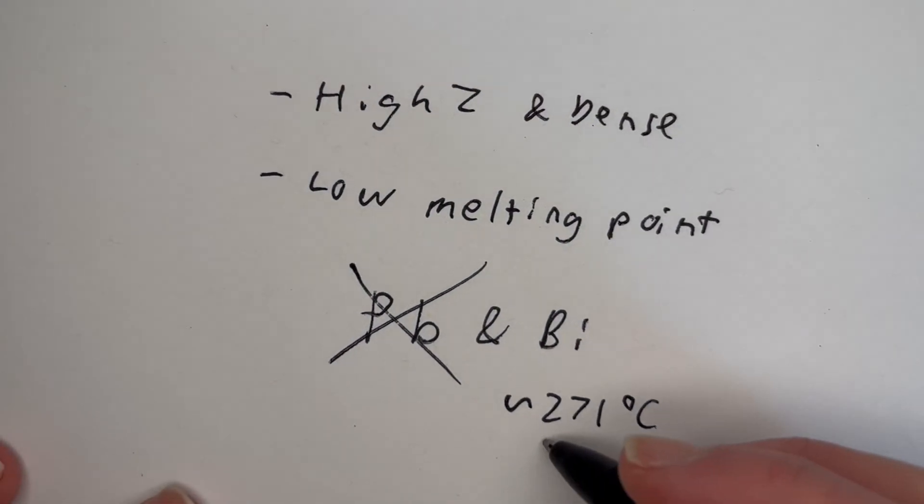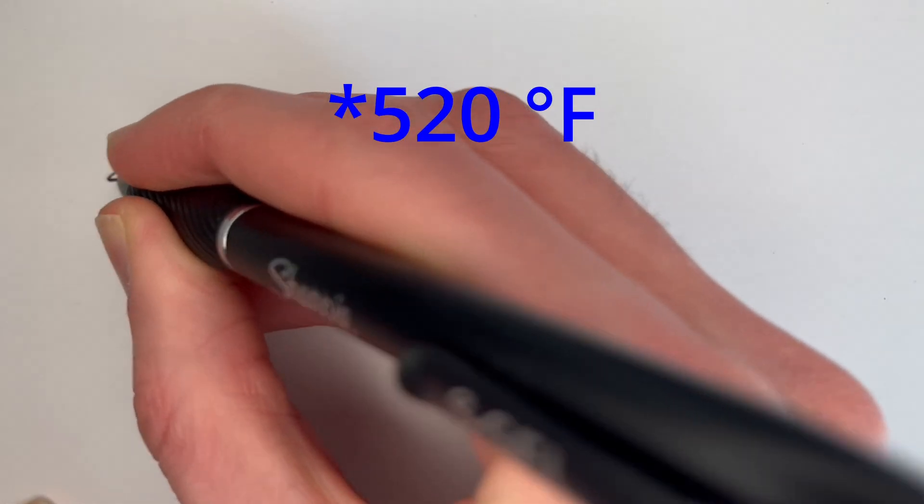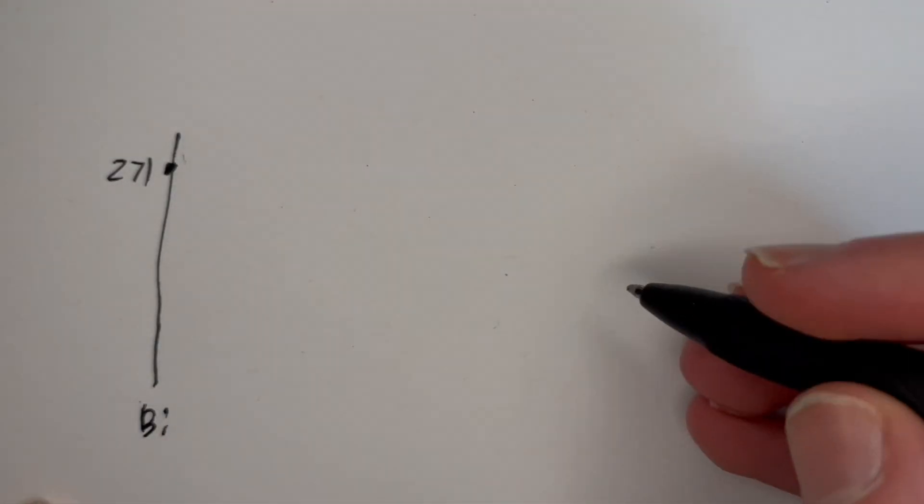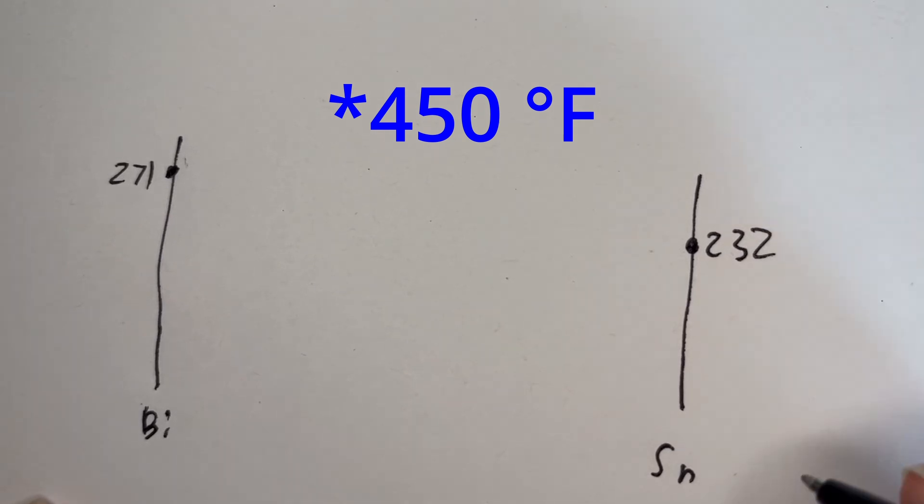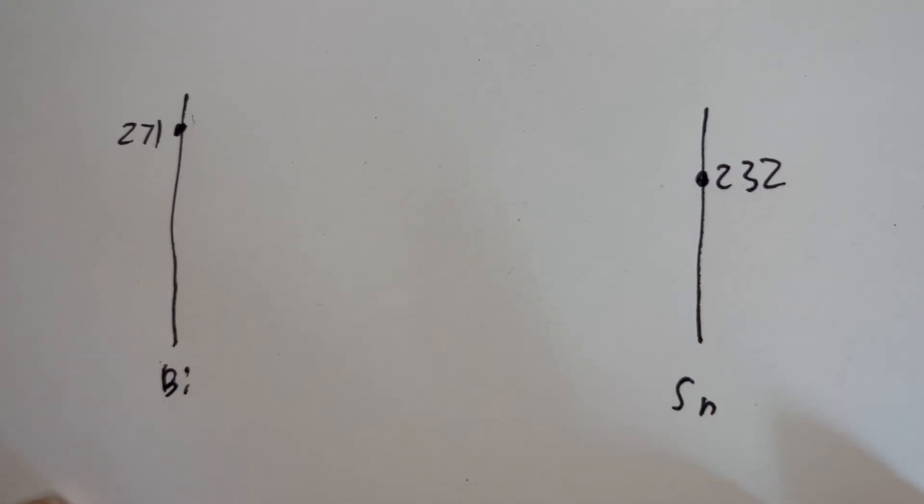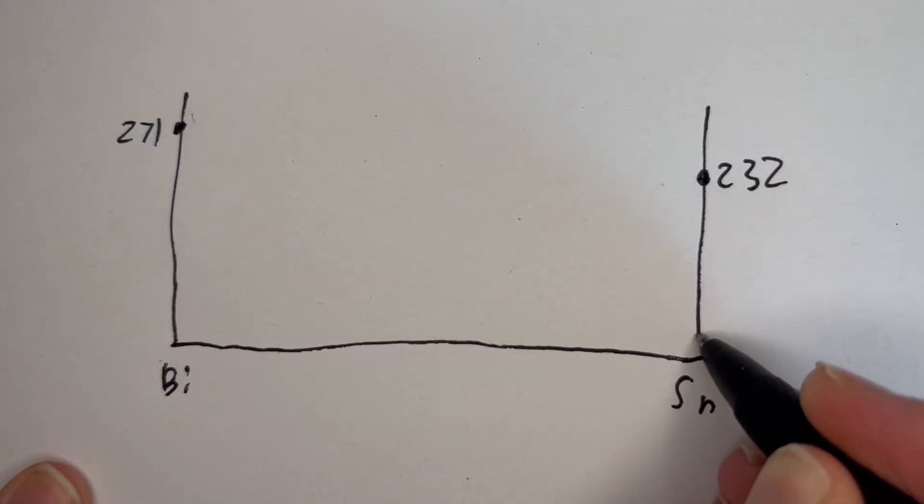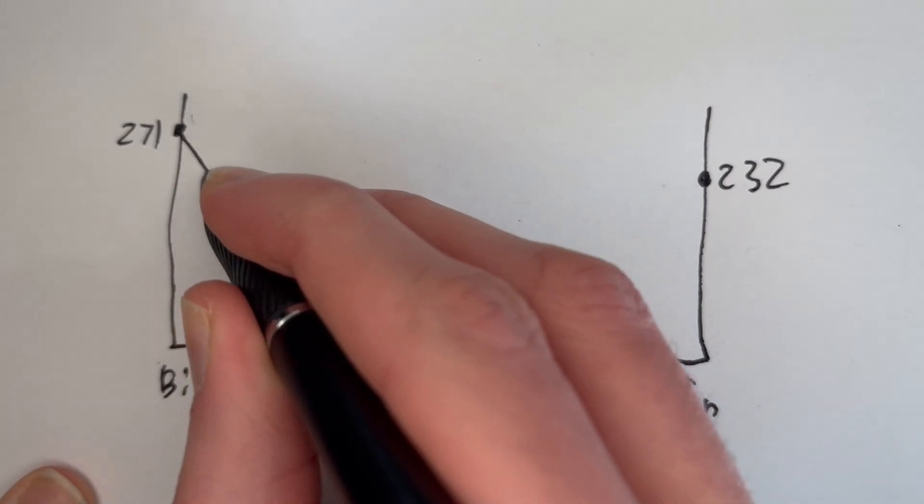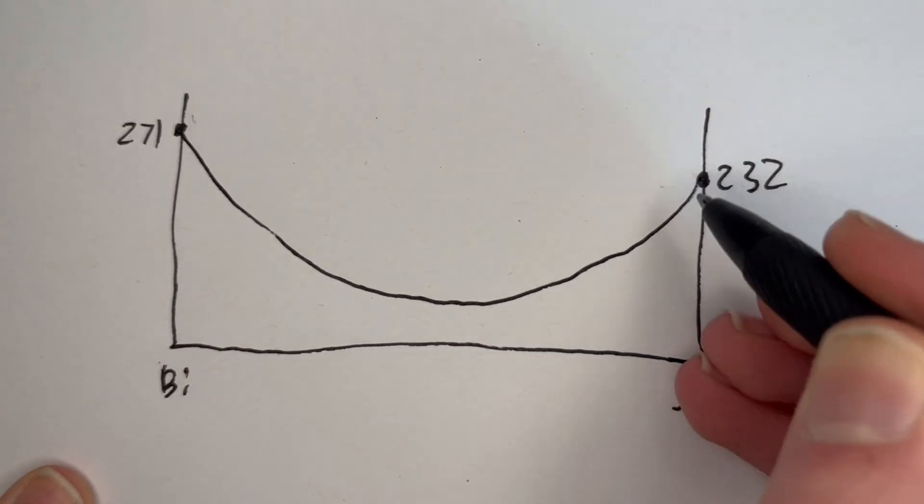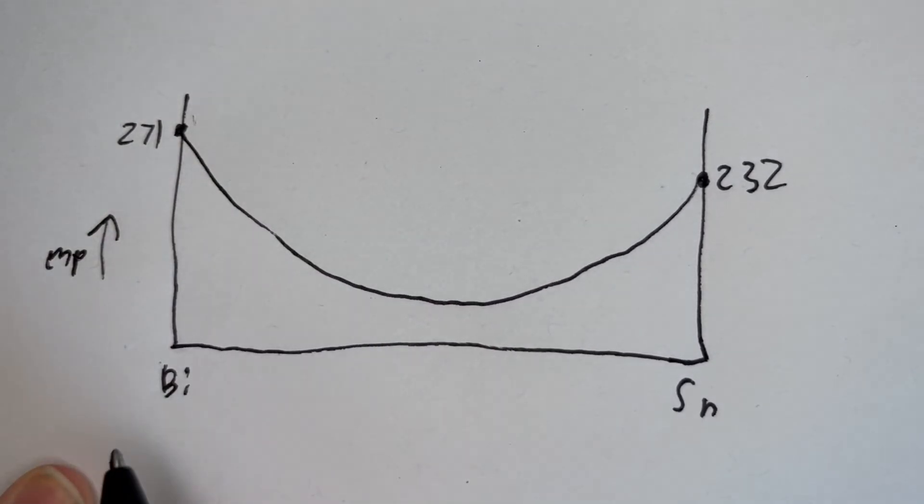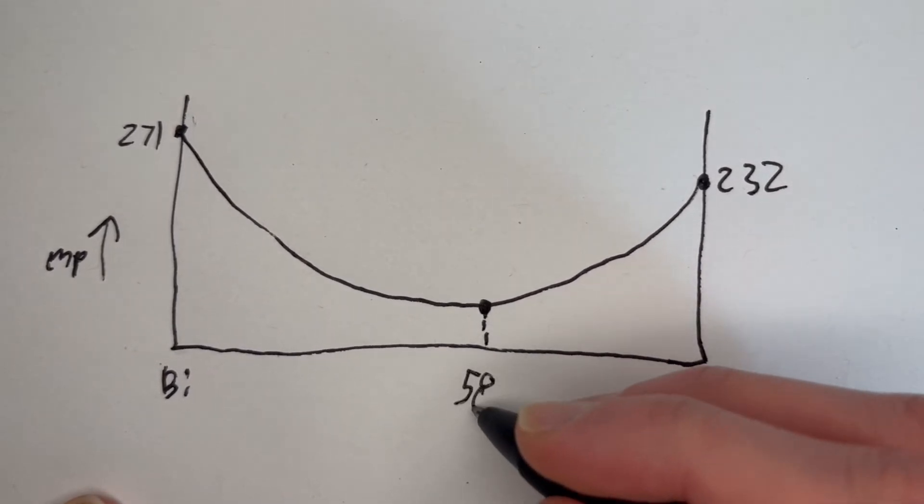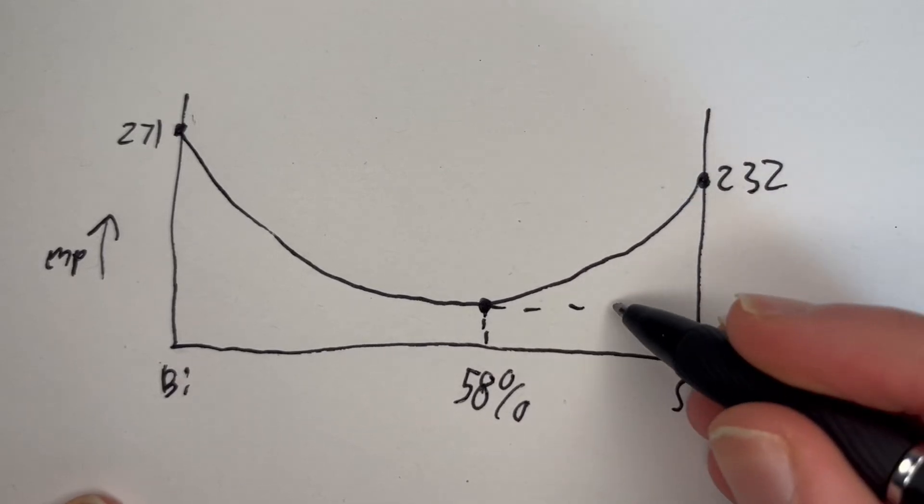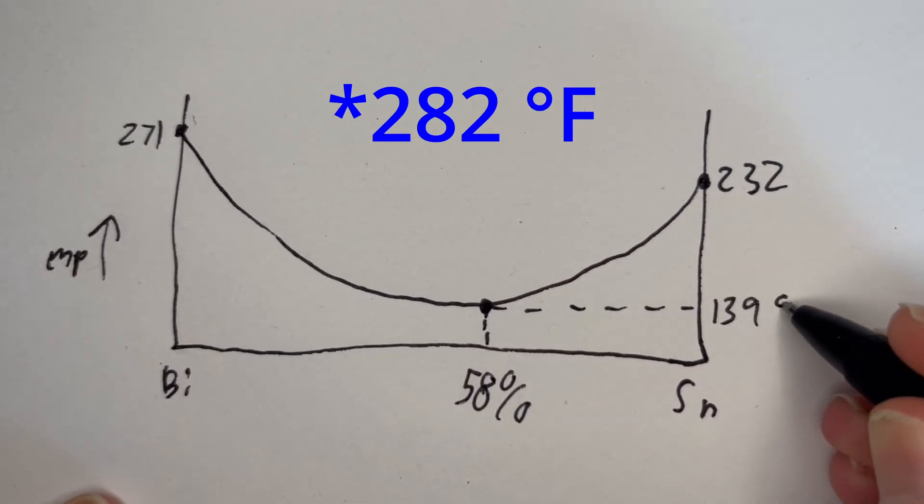Pure bismuth has a melting point that is 271 Celsius but what if we were to mix it with another metal say tin? Tin has a melting point of about 232 Celsius and it doesn't really help us with radiation shielding much but it turns out that if you make an alloy of tin and bismuth so you mix them together you have a curve of melting points that looks a little bit like this. The lowest melting point you can have isn't pure bismuth or pure tin it's a mixture of them both. In this case that minimum is about 58 percent bismuth and that minimum temperature the minimum melting point is about 139 degrees Celsius which is ridiculously low.